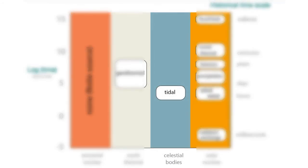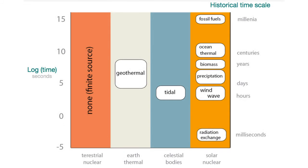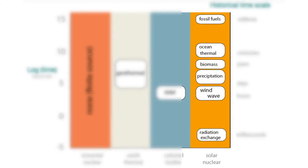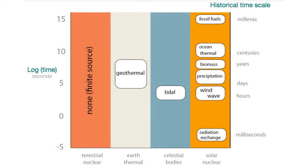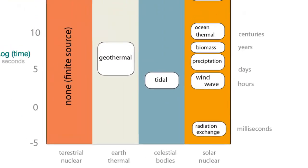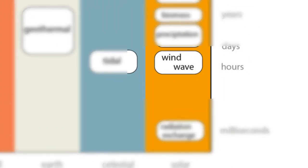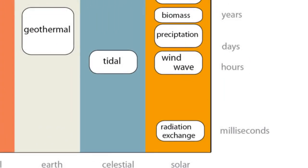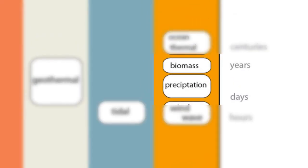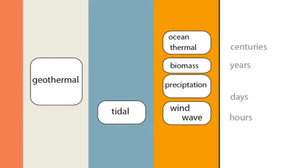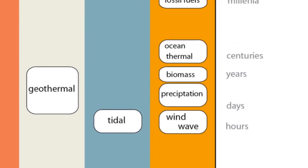Celestial bodies, which comes in the form of tidal energy, and solar nuclear energy, which has a number of expressions. One is incoming solar radiation, which is replenished on the order of milliseconds. Wind and wave energy, which takes hours or days to replenish. Precipitation and biomass, which takes more like months and years to replenish.